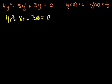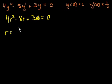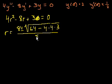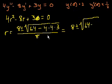Now we can figure out its roots. This is not a trivial one to factor, so we can use the quadratic formula. r is equal to negative b — b is negative 8, so it's positive 8 — plus or minus the square root of b squared, which is 64, minus 4 times a, which is 4, times c, which is 3. All of that over 2a, which is 8. That gives us 8 plus or minus the square root of 64 minus 48, all over 8.